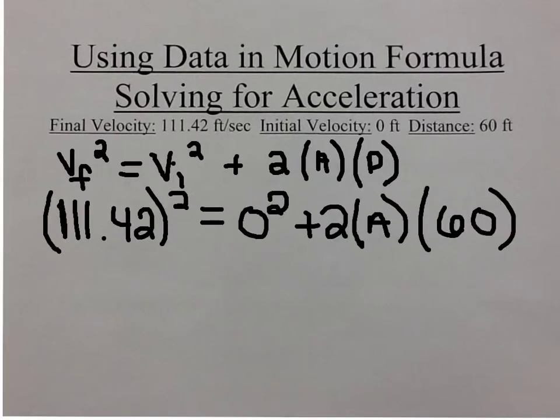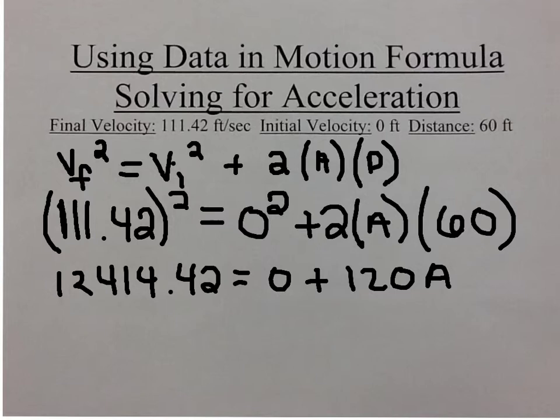Using the numbers, we can calculate the acceleration. Plugging in the numbers, it would read 111.42 squared equals 0 squared plus 2 times acceleration times 60.